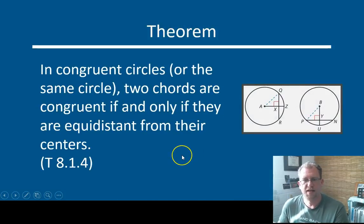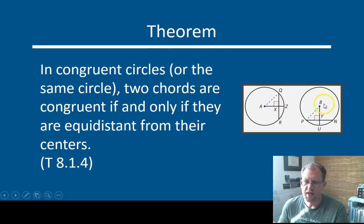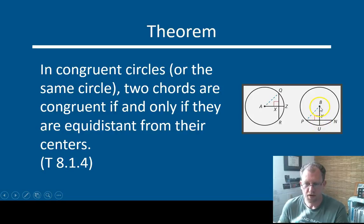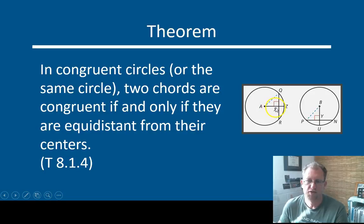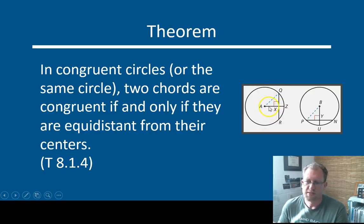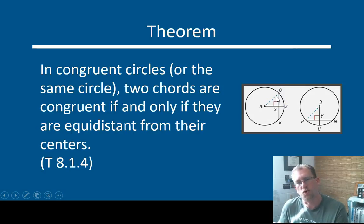Theorem: in congruent circles, or in the same circle, two chords are congruent if and only if they are equidistant from the centers. So if you have a chord in circle A and circle B and they're congruent, and chord QR is the same distance from the center as chord PN, then they're the same length. The length of the chord is proportional to how much of the radius there is before it intersects — as the chord moves further from the center, the chord gets smaller. As long as it's the same distance along that radius, the chord will be the same length, whether in the same circle or in two congruent circles.